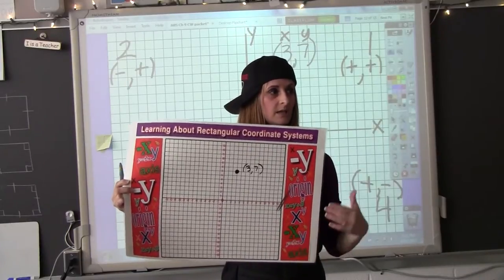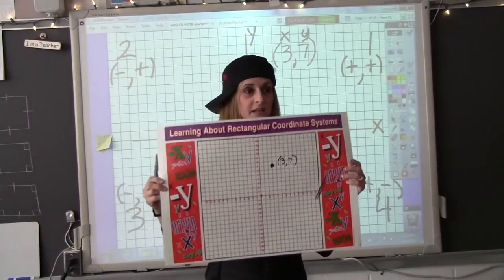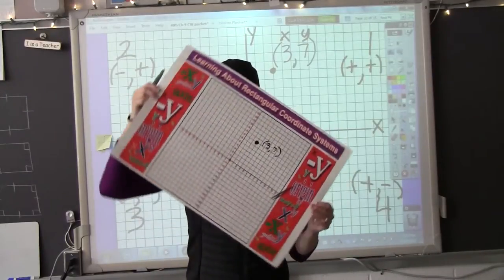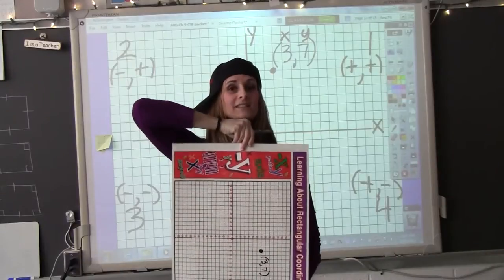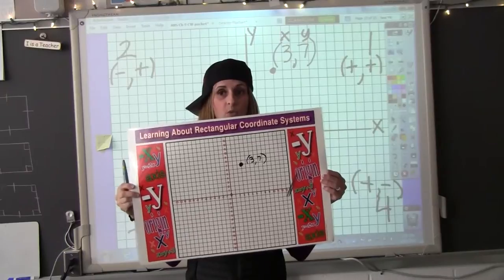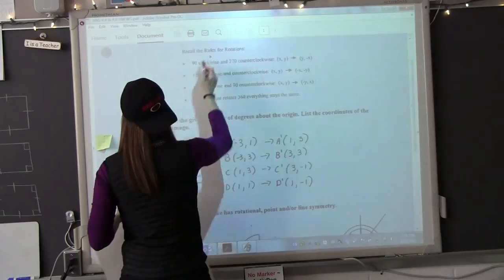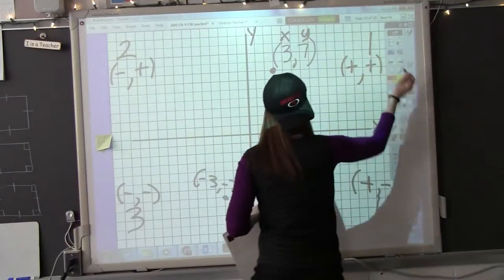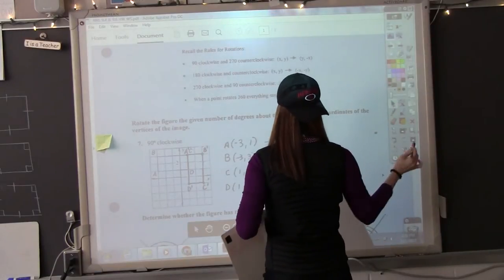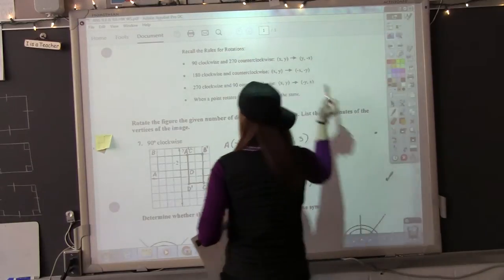90 degrees, a little bit more complicated. When you rotate 90 degrees, let's do clockwise like the clock, the x-axis and the y-axis change places, right? So that is why your x and your y change in your rules.